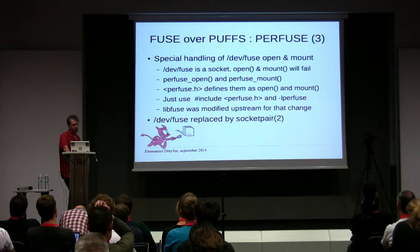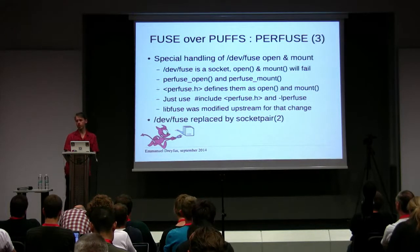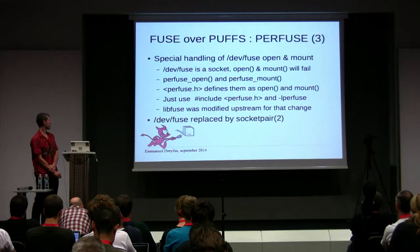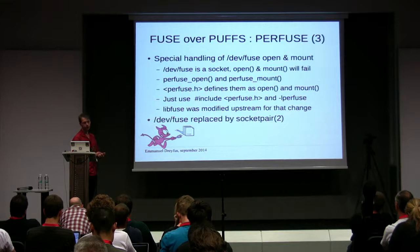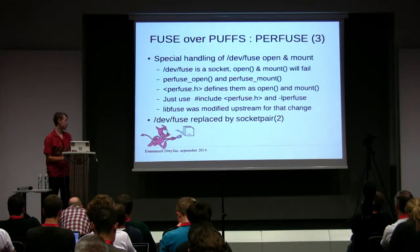There is one small problem: a socket doesn't have exactly the same semantics as a character device. For example, you can open and mount a character device, which is impossible for a socket — you have to use socket, bind, and connect. So we cheat a bit using defines to wrap PerFUSE open, which does the socket, bind, and connect. We define it as open in the PerFUSE header so things just work. libfuse was also modified to support NetBSD, and later the /dev/fuse socket was replaced by an AF_UNIX socket using socketpair.